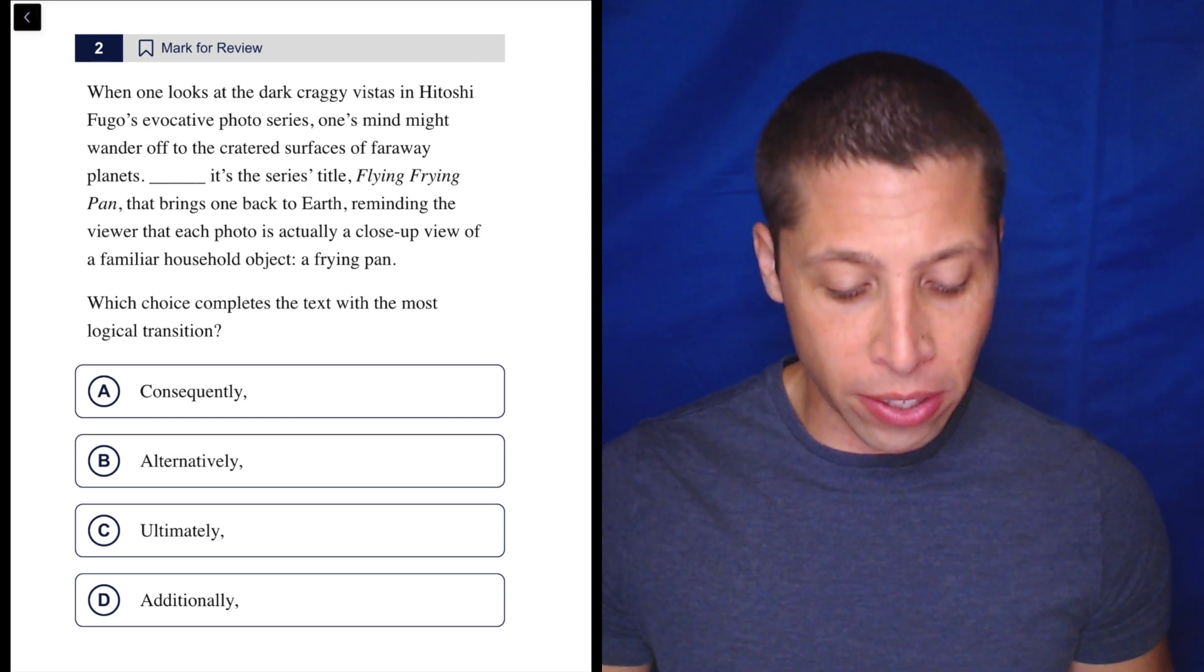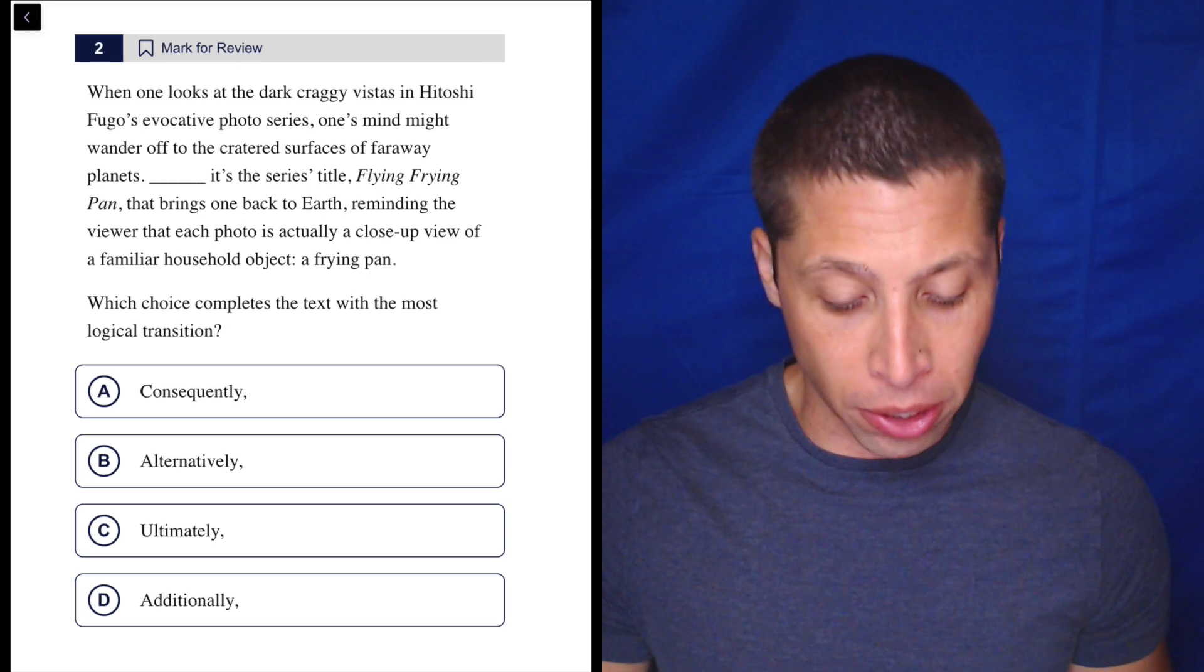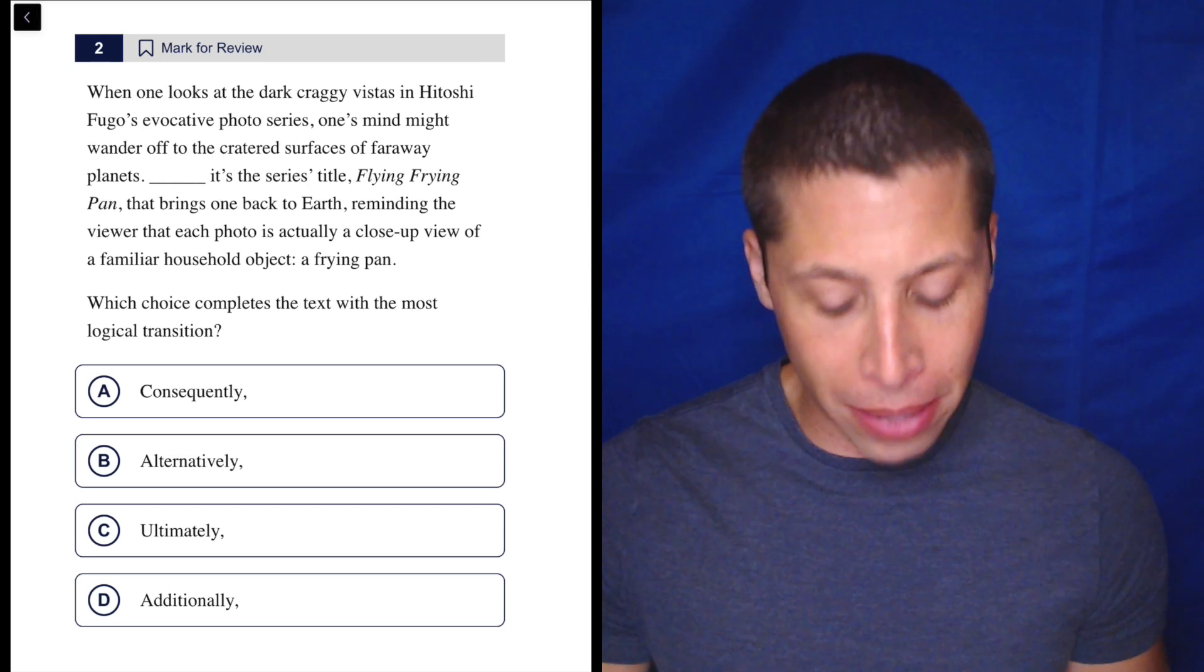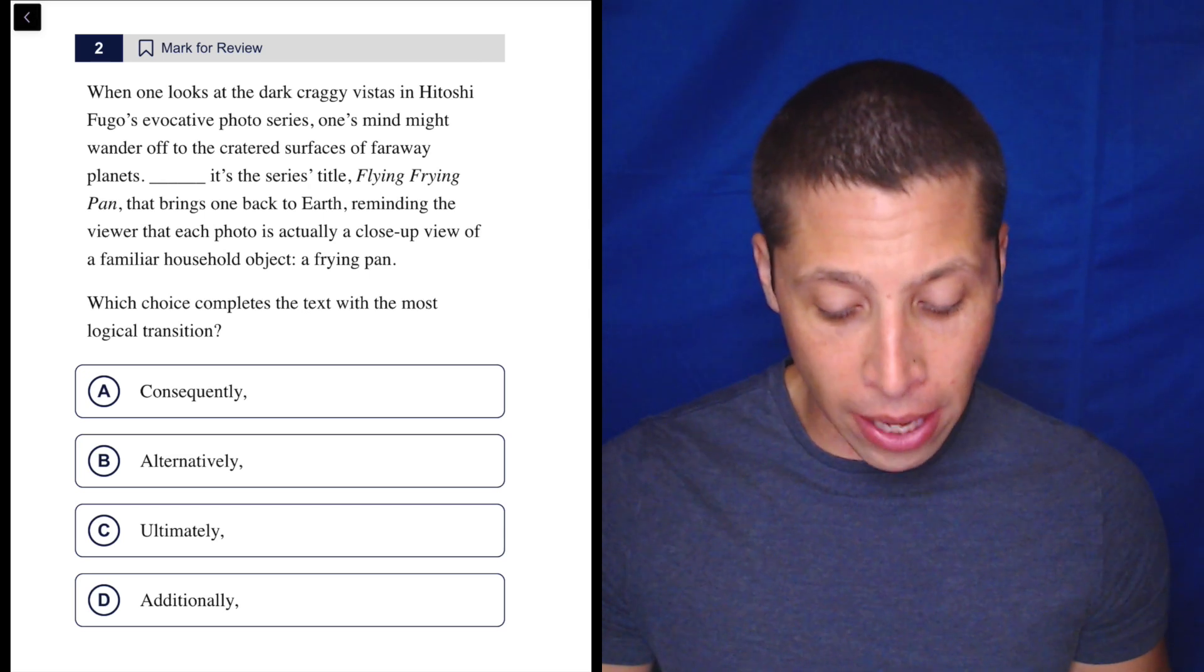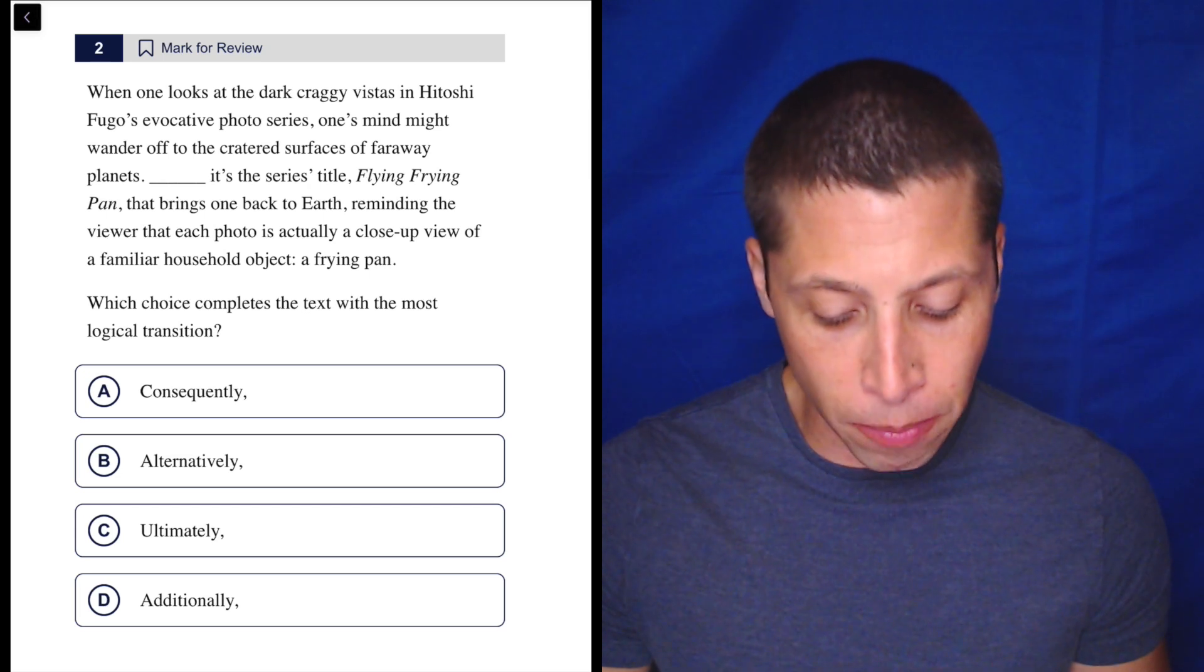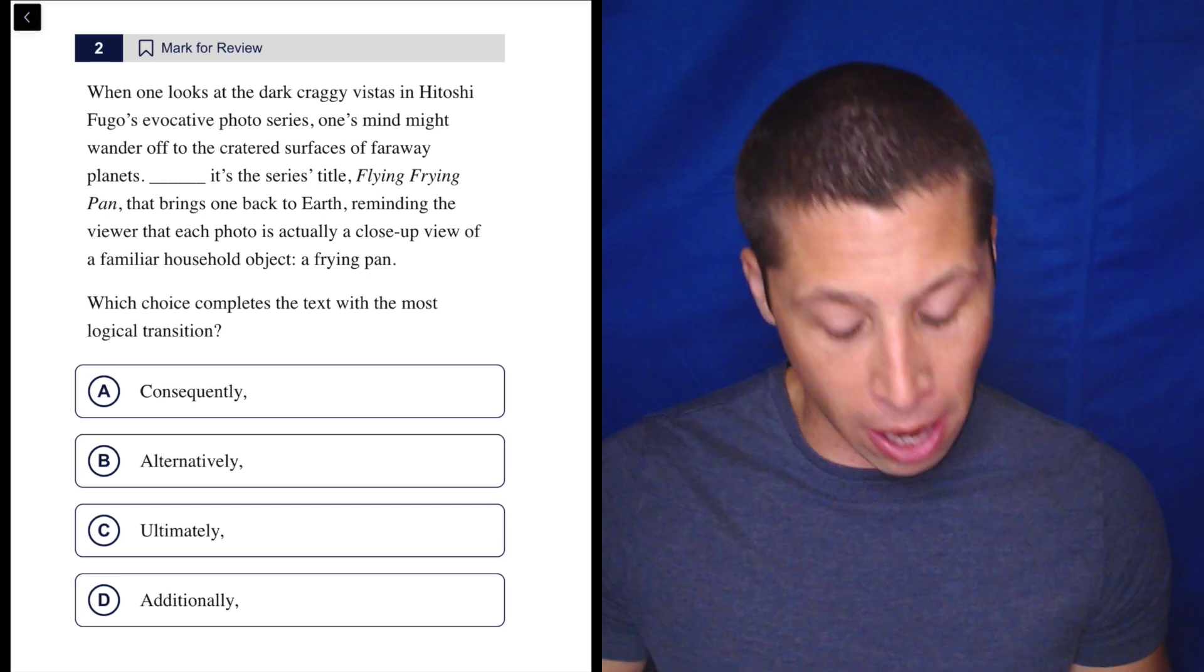When one looks at the dark, craggy vistas in Hitoshi Fugo's evocative photo series, one's mind might wander off to the cratered surfaces of faraway planets. It's the series title, Flying Frying Pan, that brings one back to Earth, reminding the viewer that each photo is actually a close-up view of a familiar household object, a frying pan.